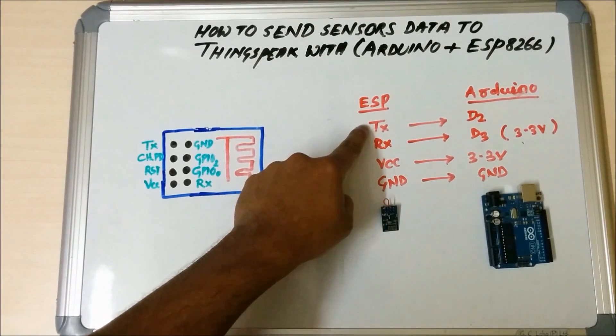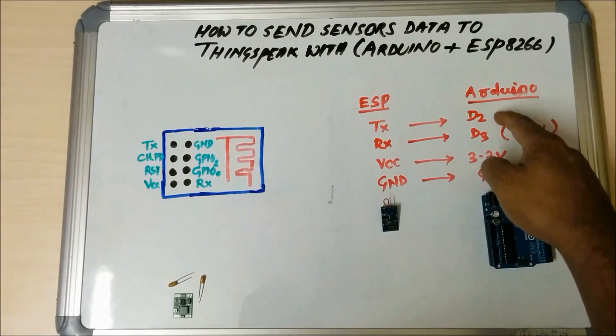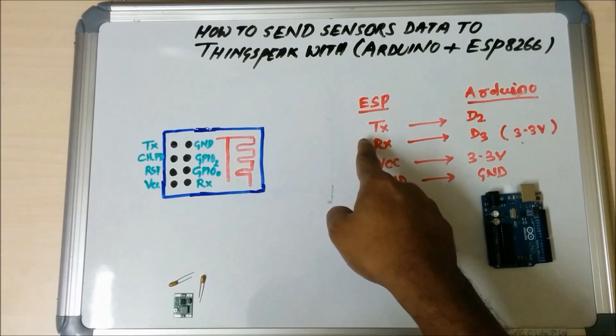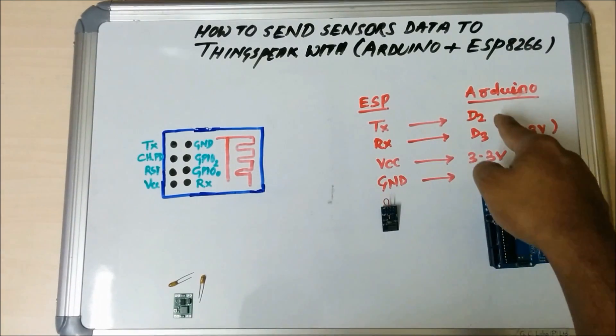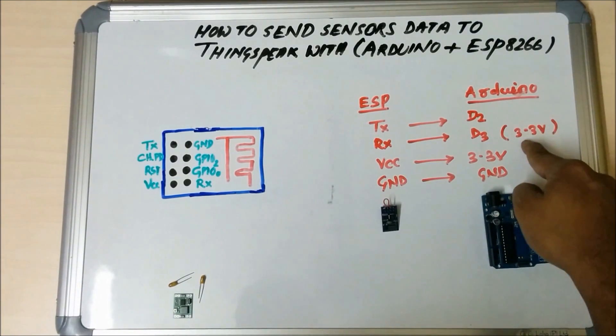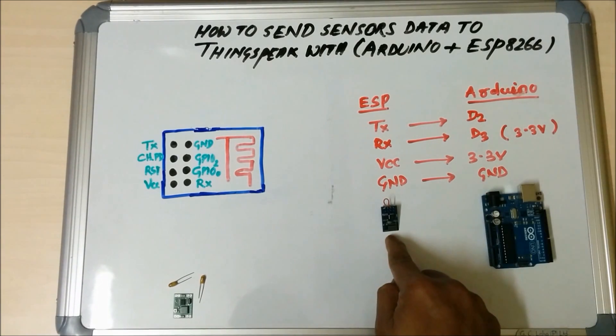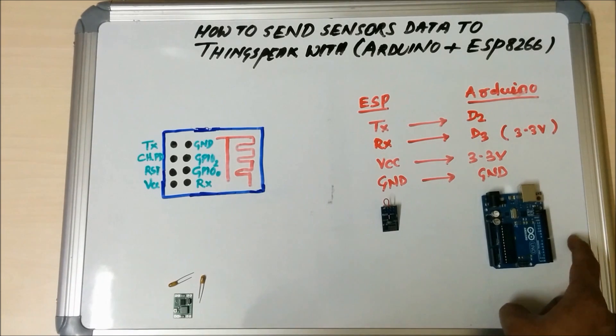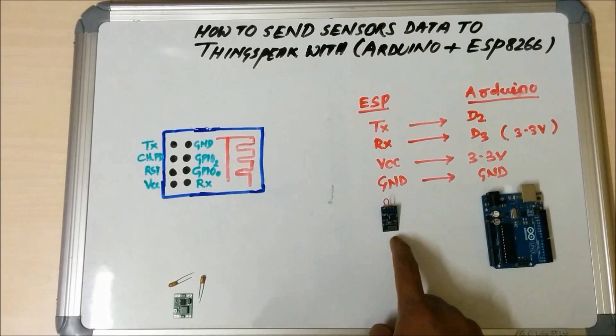You can see the ESP TX pin is hooked up to Arduino digital pin D2 and the RX pin of ESP is connected to D3, but I write 3.3V because it receives only 3.3V from Arduino, but your Arduino produces 5V. So you need a voltage divider network to step down 5V to 3.3V for ESP8266.